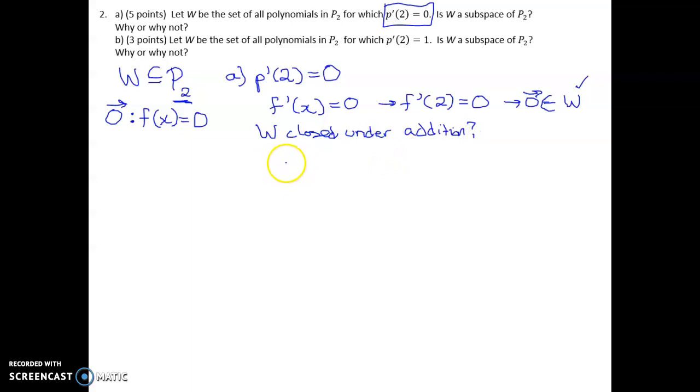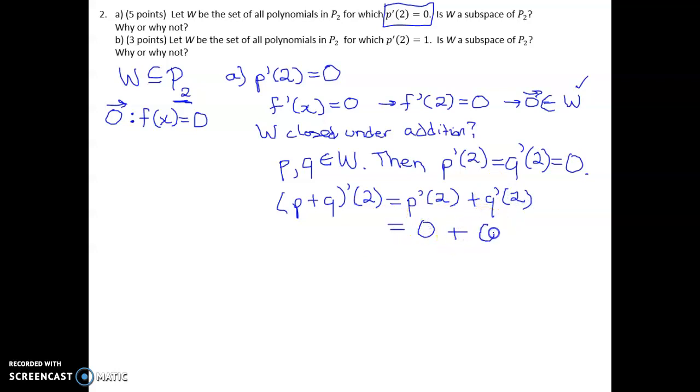So to verify that, you need to take any two generic elements of W. So let's say that P and Q are both elements of W. Then next we should write down what we know about P and Q. So specifically, if they belong in W, then the derivative of P at 2 and the derivative of Q at 2 should both equal 0. Now, if we add those two polynomials, P plus Q, and take the derivative at 2, well, there's a property of differentiation that says when you have a sum of two functions, you can just take the derivative one part at a time. Since P belongs in W, we know that this derivative is 0. Since Q belongs in W, we know that this derivative is 0. So the sum is 0, which proves that P plus Q belongs in W. And so W is closed under addition.